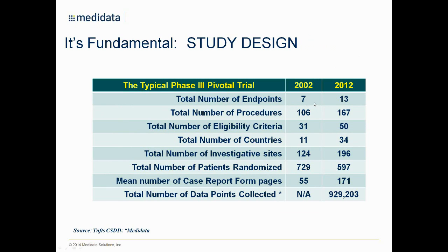Over a 10-year period, we see the number of endpoints almost doubling in a pivotal Phase III study, the number of procedures going up drastically, and the number of eligibility criteria going up drastically. I can understand the increase in the number of countries and sites required to get patients, because we've seen a much slower enrollment rate due to increased study complexity. We also see that the total number of randomized patients has actually gone down, while the number of case report forms used to collect data has gone up.